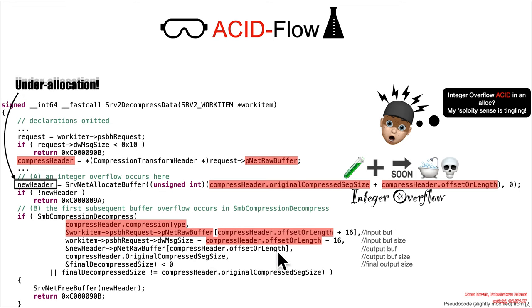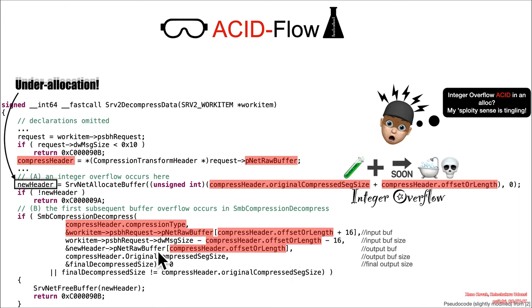This is acid math, and there is the potential for something like an integer underflow at this point, but that is not actually going to be to the attacker's advantage here, because they do want to allow decompression to occur. They want to let this small amount of data coming in get expanded up to a big amount of data to buffer overflow. So they don't use that acid math for integer underflow there. Then the output buffer is controlled by this new header, which was that underallocation — new header p-net-raw buffer — at some offset that the attacker controls past the beginning of the allocation; that's where it's going to write data out to.